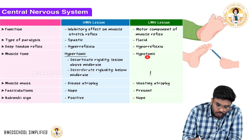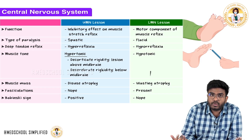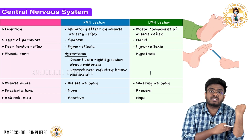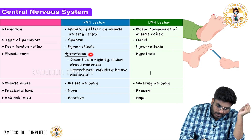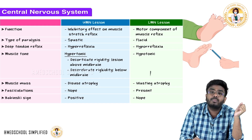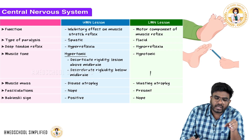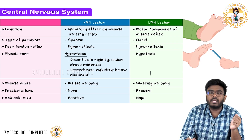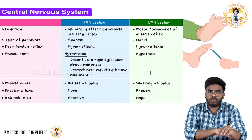Looking at muscle tone: in upper motor neuron lesions, the lower motor neurons are over-firing and causing spasticity with unnecessary contraction, so there is hypertonia — a lot of tone in the muscle. In lower motor neuron lesions, lower motor neurons are not working, muscles are not contracting, muscles are absolutely relaxed and flaccid, so there is hypotonia — low tone.